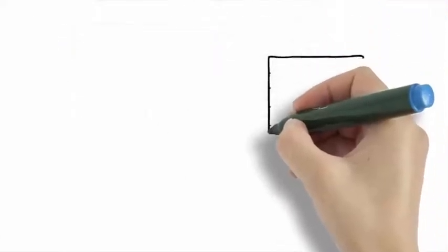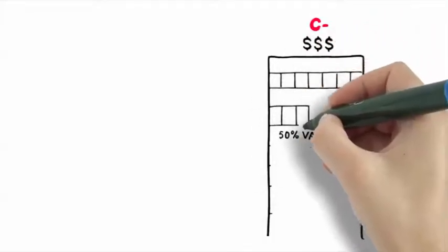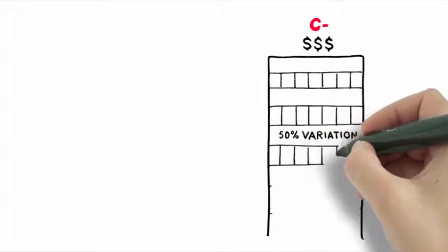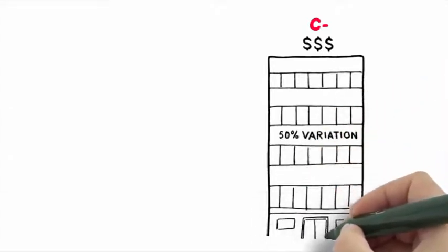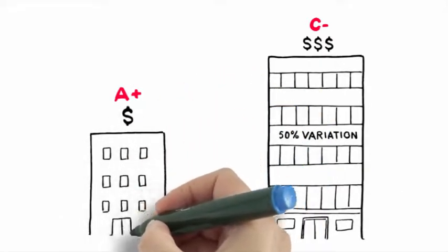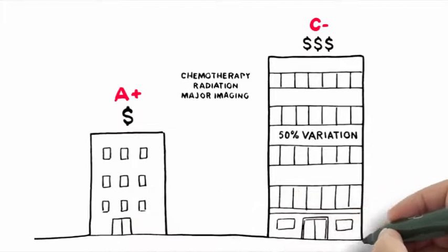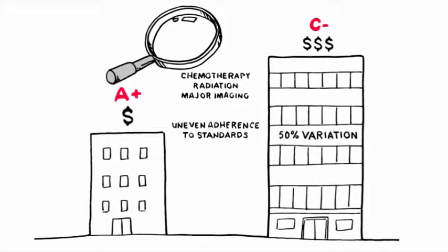A close look at commercial claims data shows a 50% variation, $30,000 to $50,000 per patient, in the cost of newly diagnosed lung cancer episodes between more efficient and less efficient settings, driven by wide variation in the use of chemotherapy, radiation, and major imaging.